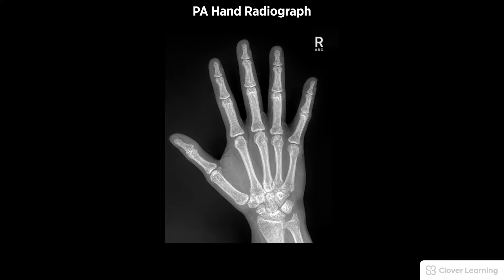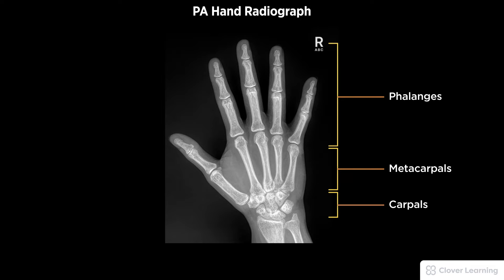A diagnostic PA hand radiograph must be free of motion and rotation with open interphalangeal and metacarpal phalangeal joints. Demonstrated anatomy to include the phalanges, metacarpals, carpals, and distal radius and ulna with proper visualization of soft tissue and bony detail.